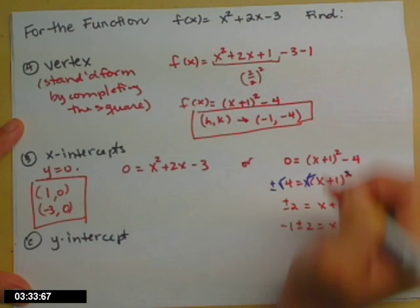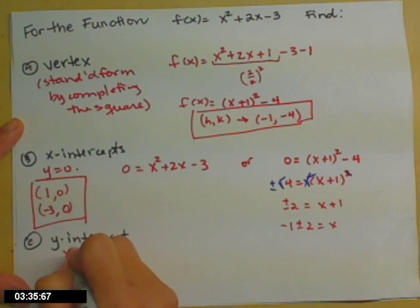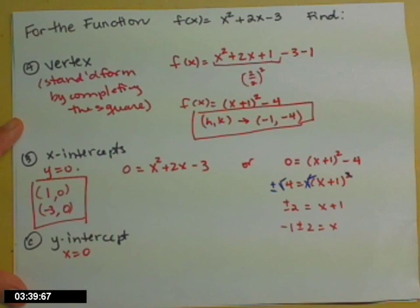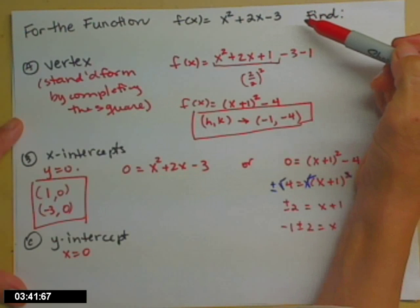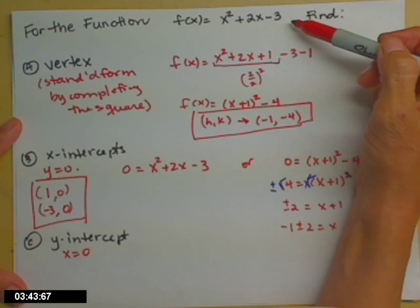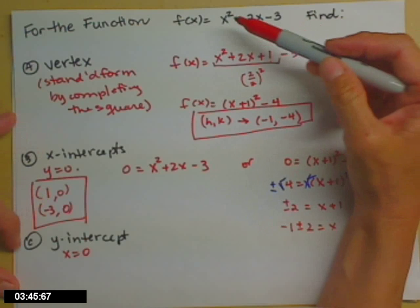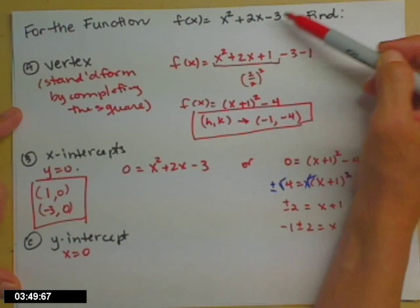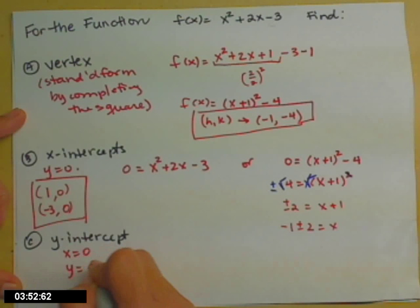I have a vertex. And now the y-intercept. Well, the y-intercept, I need x equal to 0. So here's the time where I will pop back up here to the original, when it was in the general form. So if x is 0, this term goes away, that term goes away, and all I get is a y-value of negative 3. So that's the point 0, negative 3.